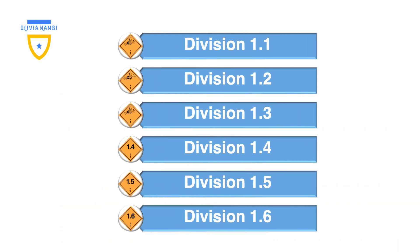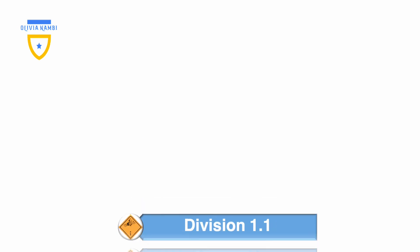Class 1 is subdivided into six hazard divisions due to its wide scope: division 1.1, 1.2, 1.3, 1.4, 1.5, and 1.6.